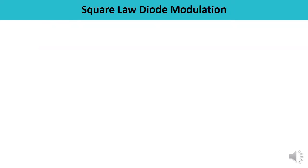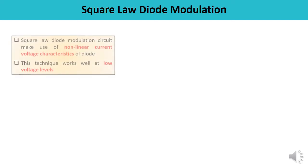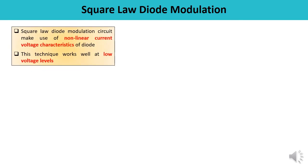Now let us discuss the square law diode modulation in detail. This type of circuit makes use of the non-linear current-voltage characteristics of the diode. It utilizes the non-linear V-I characteristics, and this technique works well for low-voltage level modulation.